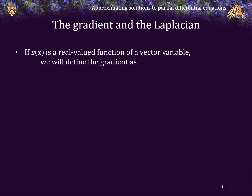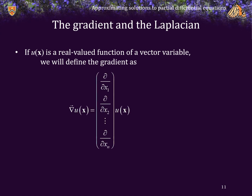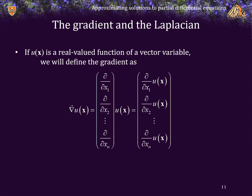We'll look more at this later when we start solving the heat and wave equations in higher dimensions. If u(x) is a real-valued function of a vector variable, we define the gradient as follows. The gradient, which I am representing by a downward-pointing triangle with an arrow on top to emphasize it is a vector, is a vector of n partial derivatives, where n is the dimension of x. Applying this operator to the function u takes the partial of u with respect to each of the n variables, producing a vector-valued function.